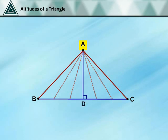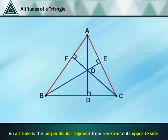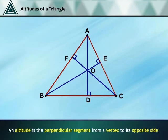The line segment AD is the altitude of the triangle and its length is considered as its height. An altitude is the perpendicular segment from a vertex to its opposite side. It can be drawn from each vertex.